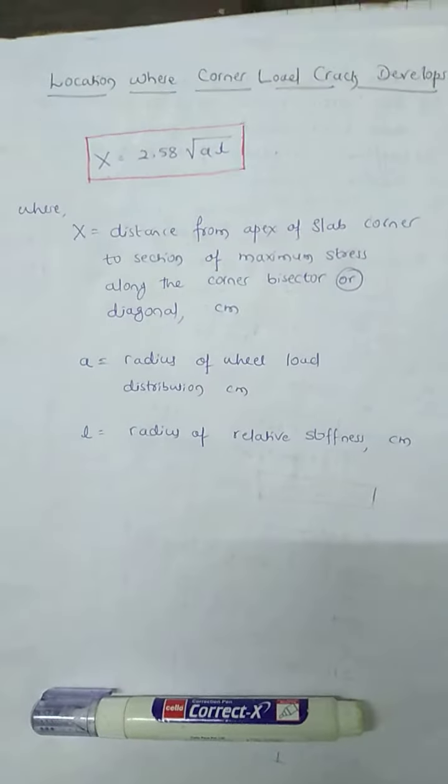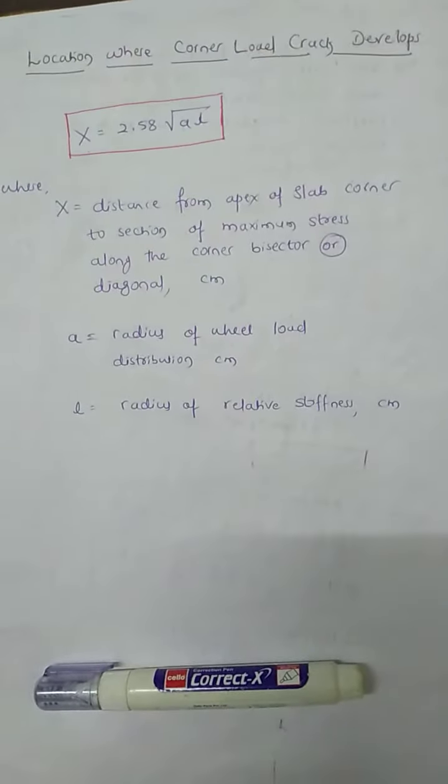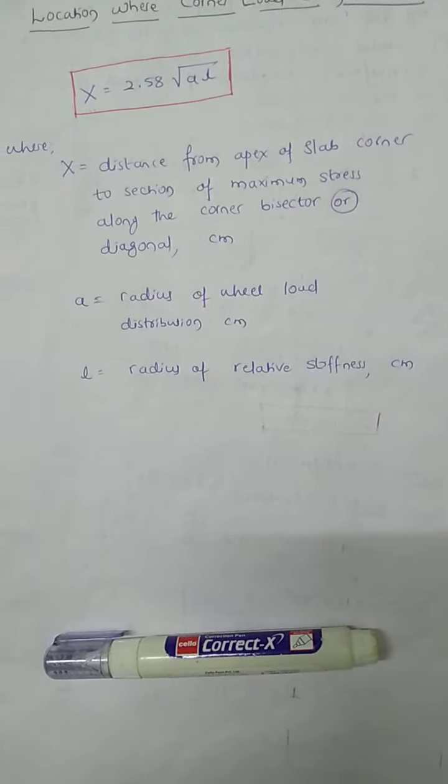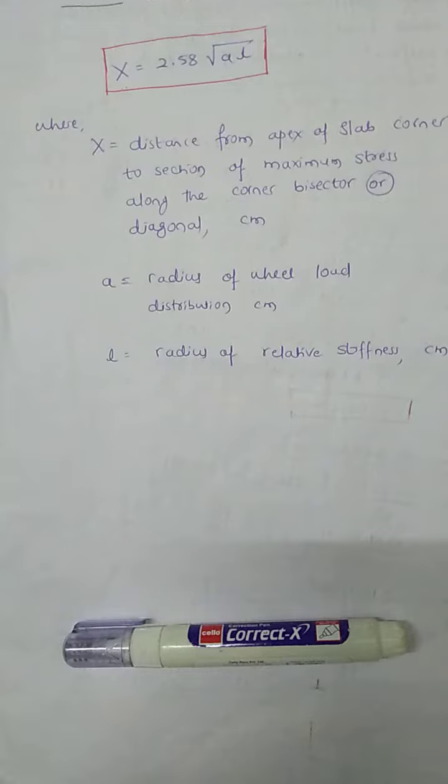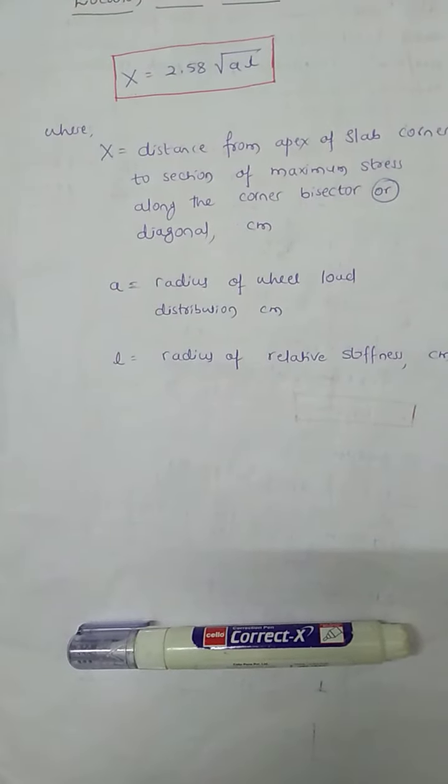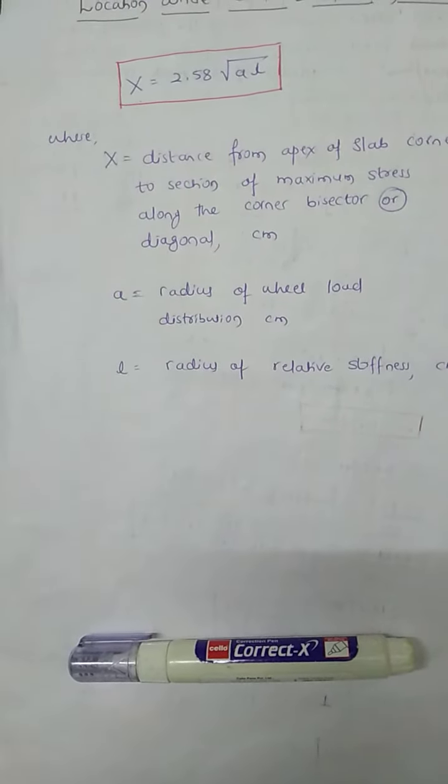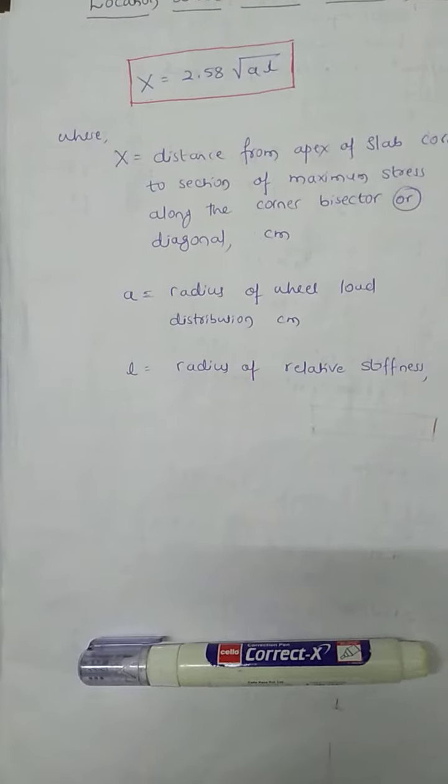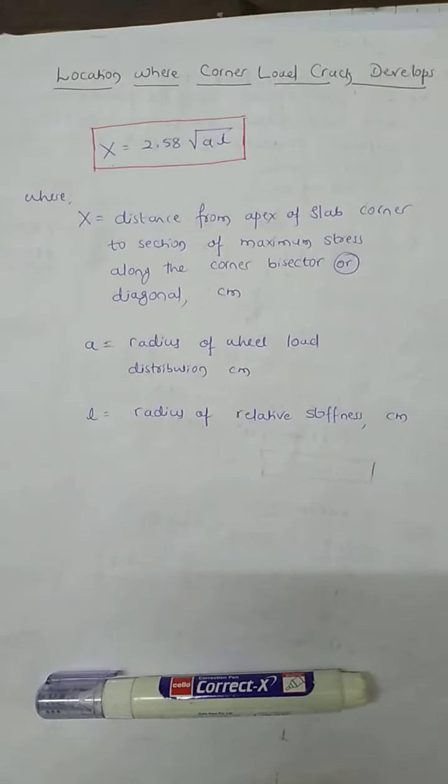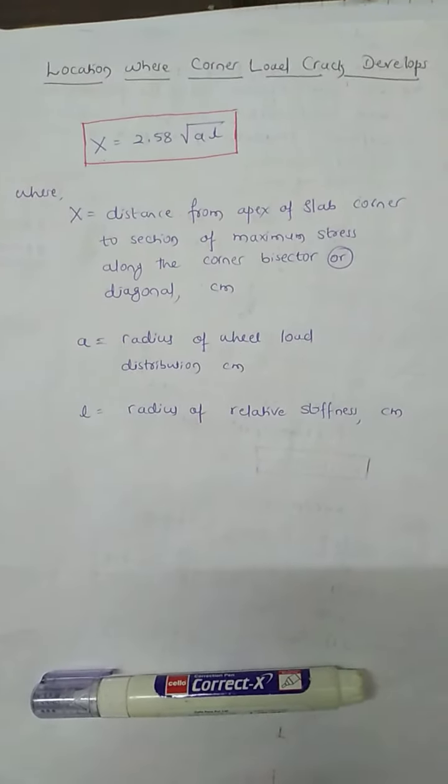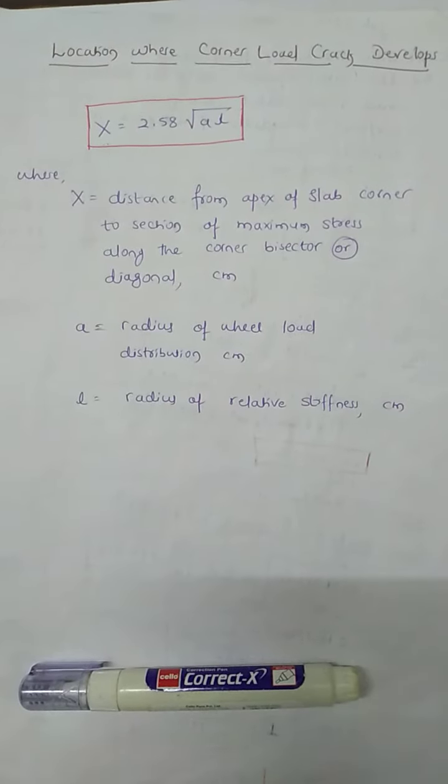Due to the corner loading, the tensor stress is developed on the top of the pavement across the corner bisector or the diagonal. If the corner load stress exceeds the flexural strength of CC slab, a crack is likely to develop across the diagonal on the top surface of the pavement.